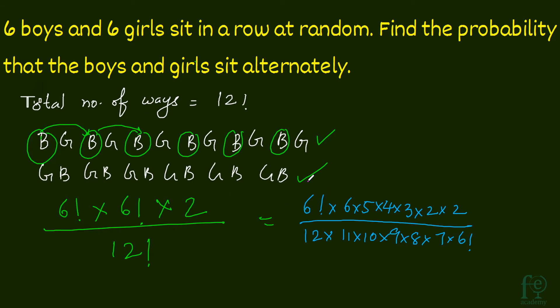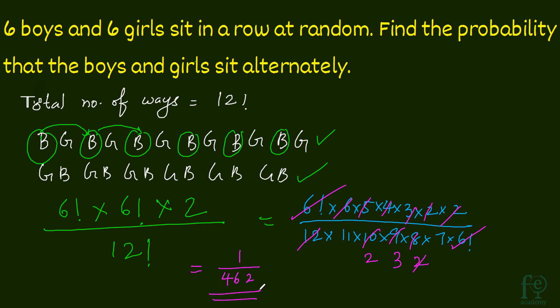Simplifying: we write 6 factorial as 6 into 5 into 4 into 3 into 2 into 1, and 12 factorial as 12 into 11 into 10 into 9 into 8 into 7 into 6 factorial, so the 6 factorials cancel. Then 6 into 2 is 12, 5 into 2 is 10, 4 into 2 is 8, 3 into 3 is 9, and the remaining 2s cancel, giving 1 divided by 11 into 2 into 3 into 7, which equals 1 by 462. So 1 divided by 462 is our probability. These are very important CAT-level questions — please revise the permutations and combinations playlist. Thank you for watching.